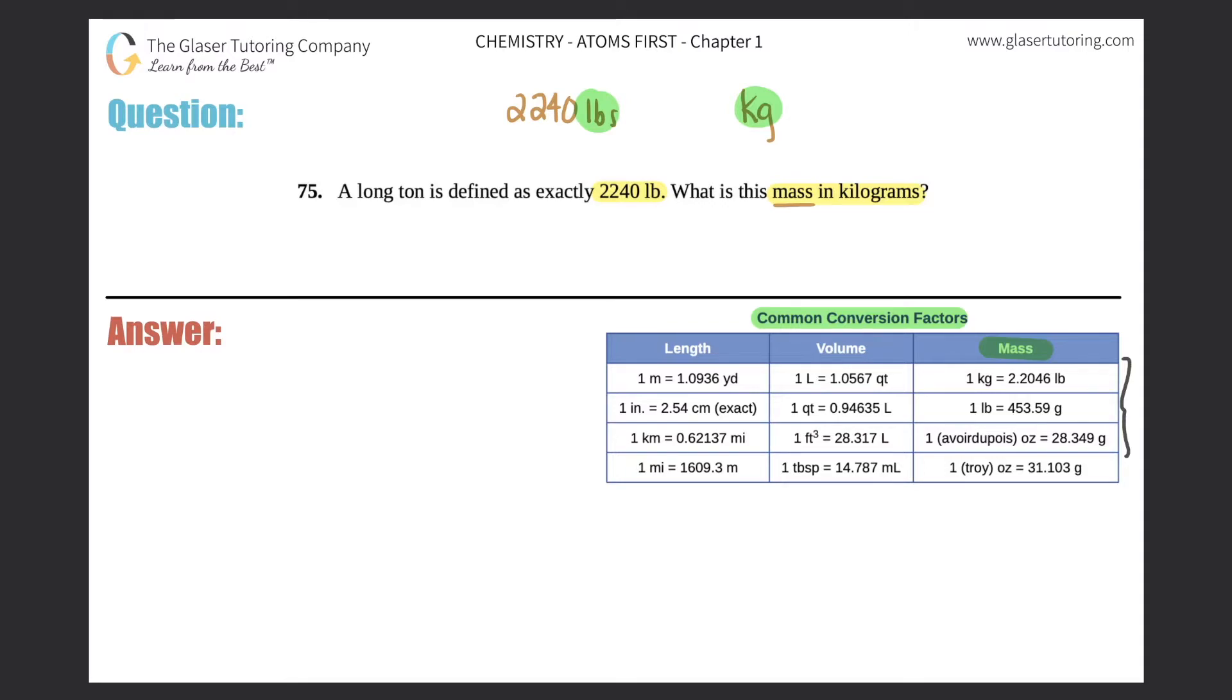it's the first one. It's telling me that one kilogram is equal to 2.2046 pounds, so I know a direct conversion between pounds to kilograms. This would be one single conversion because I know this conversion factor.